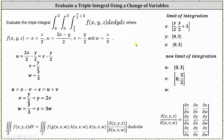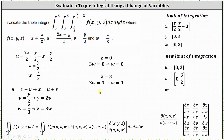Moving along to z, the lower limit is z equals zero. Since z equals three w, we get three w equals zero, so w equals zero. The upper limit is z equals three; since z equals three w, solving for w gives w equals one. So the interval of integration for w is from zero to one.